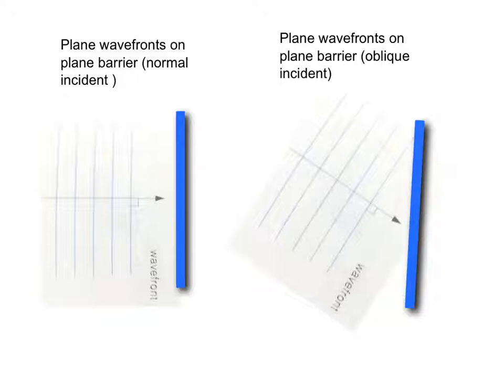For the reflection of plane wave fronts on a plane barrier, for example, normal incidence, the wave will be reflected in the opposite direction.